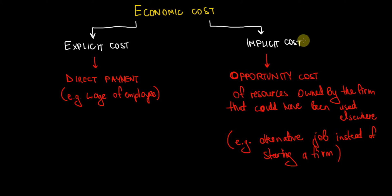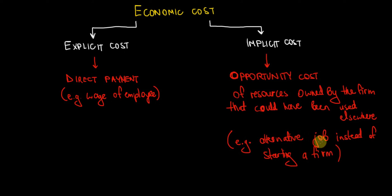An implicit cost is going to be the opportunity cost of the resources owned by the firm that could have been used elsewhere. For instance, as an entrepreneur who owns a firm, the entrepreneur could have an alternative job instead of starting that firm. So the entrepreneur is giving up a wage and income from a job in exchange for running a business. Therefore, the opportunity cost for the entrepreneur is the labor that he could have provided to another company.